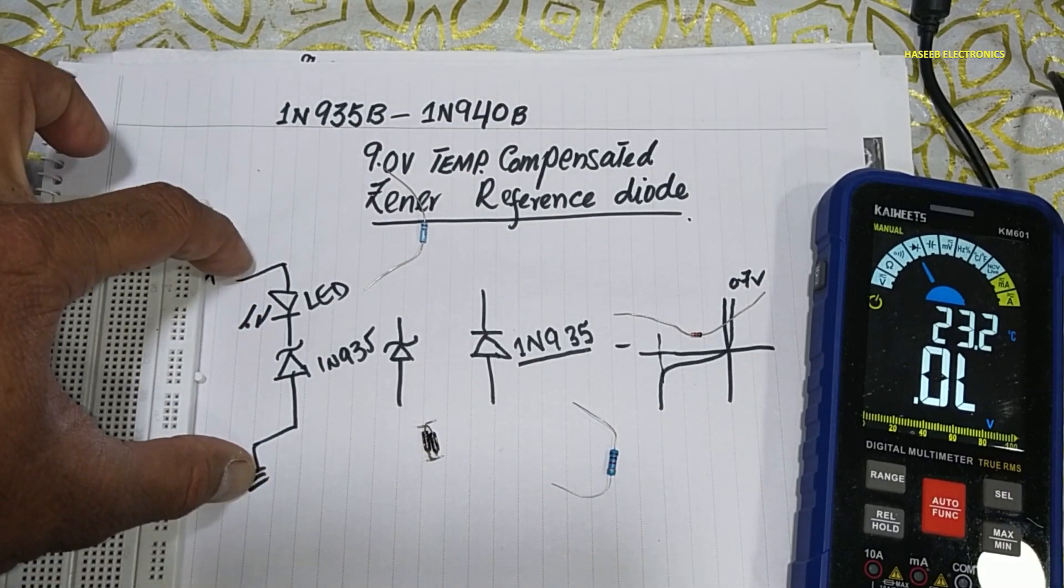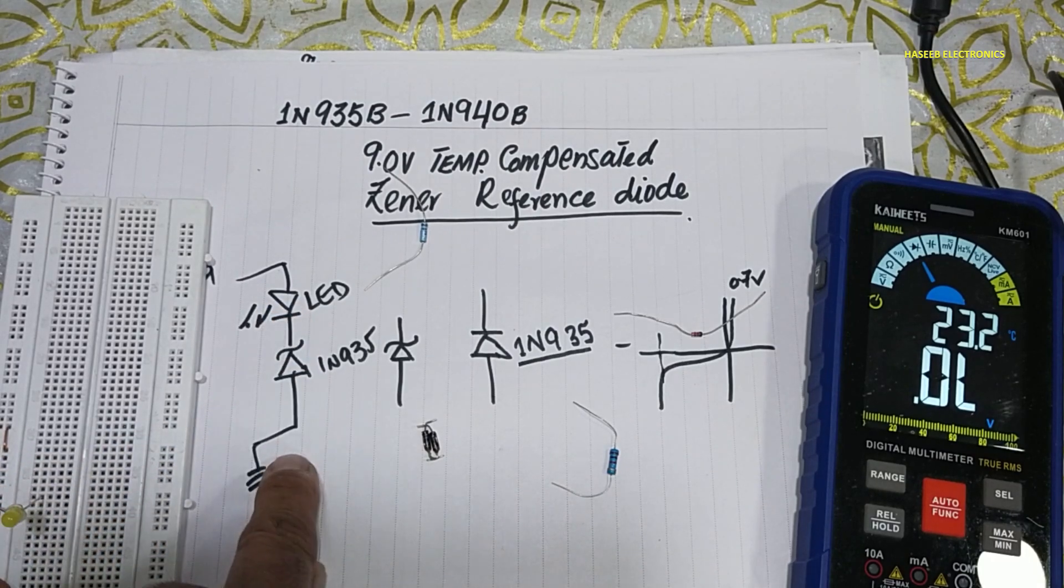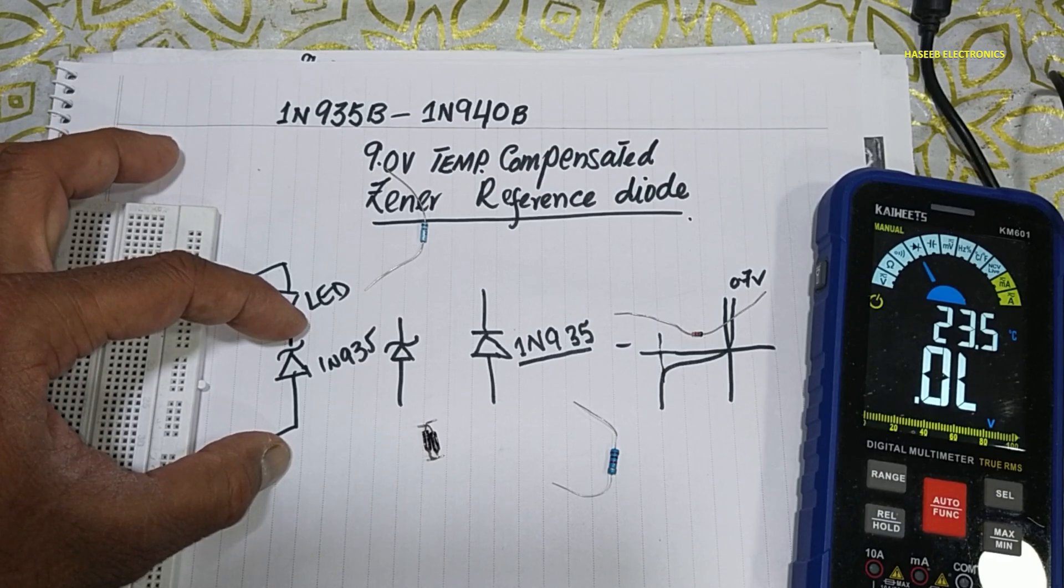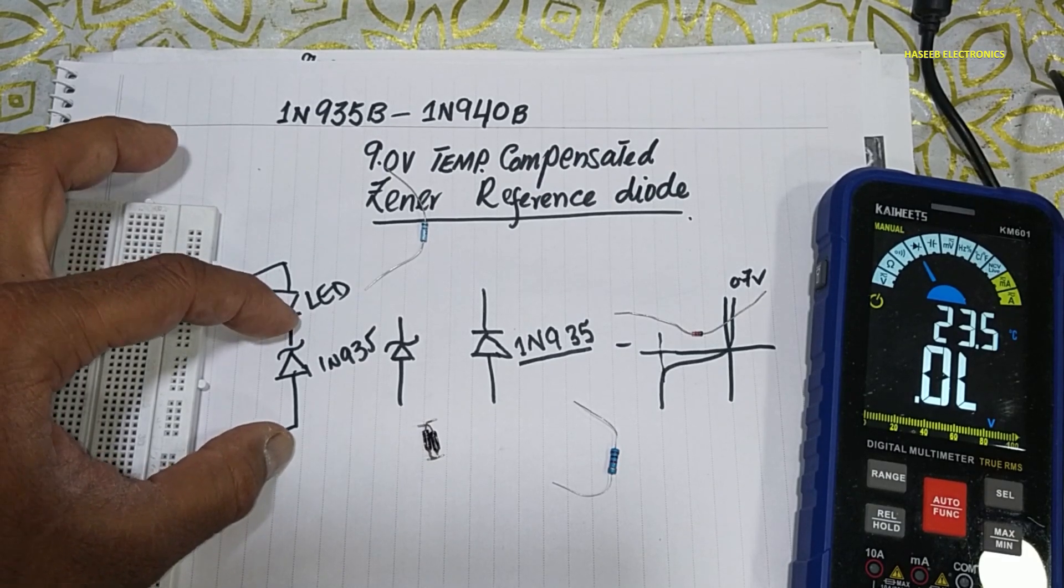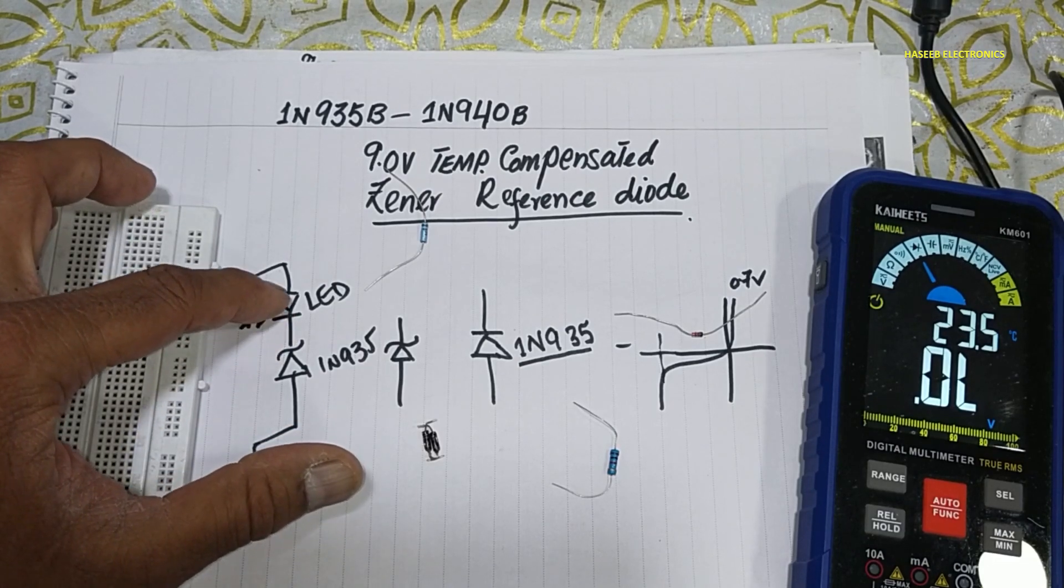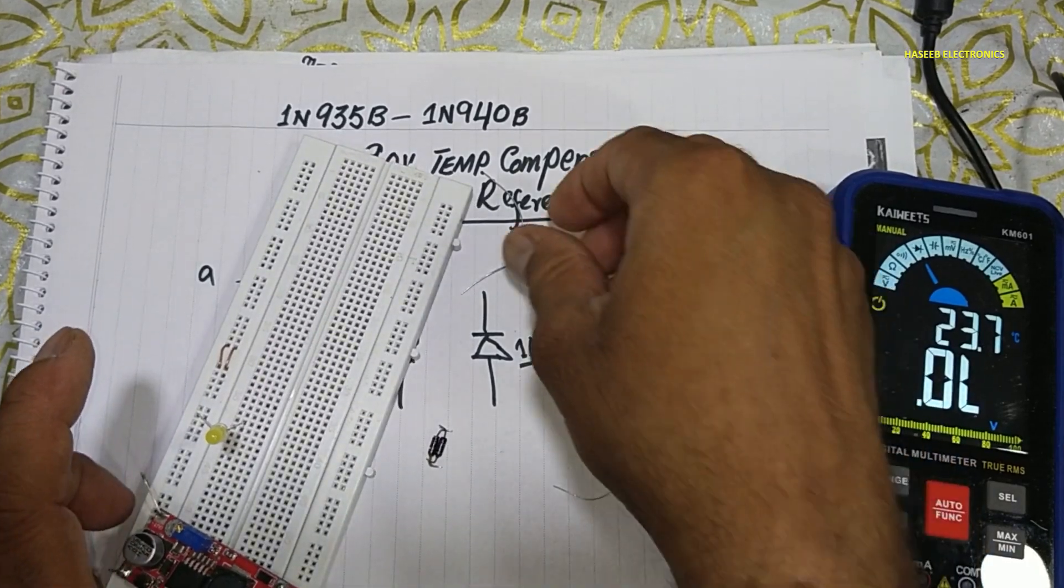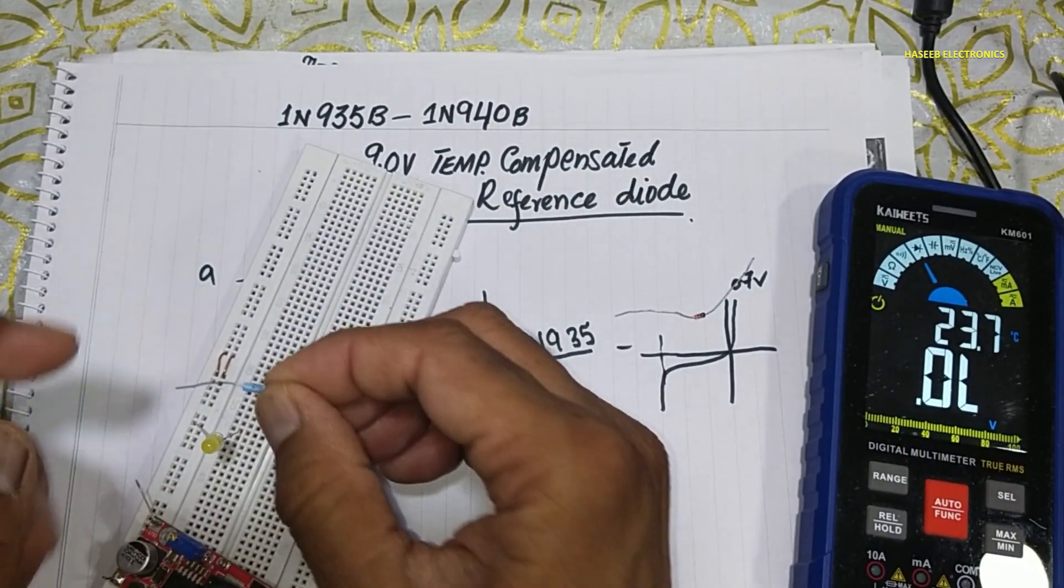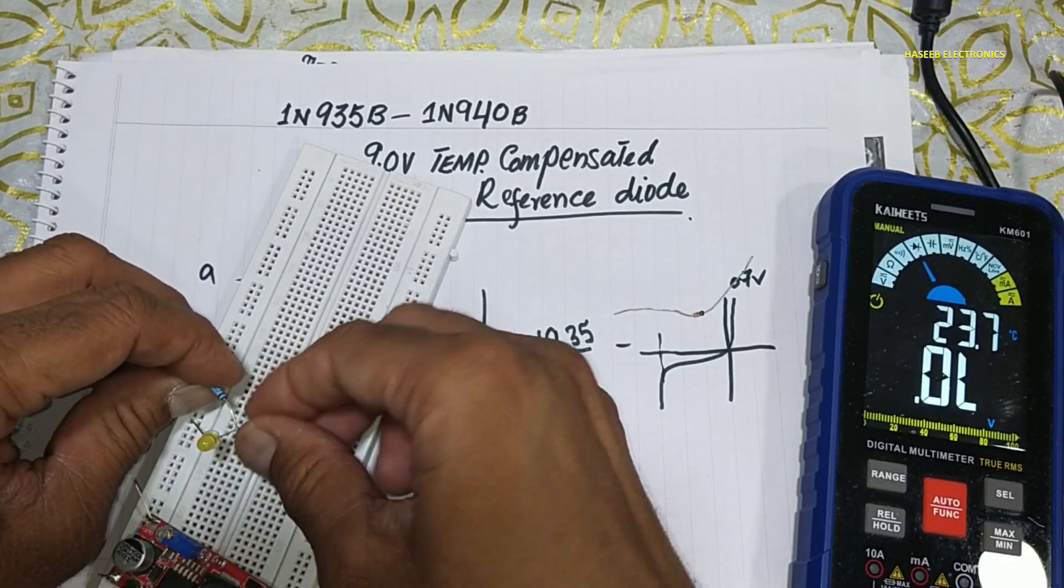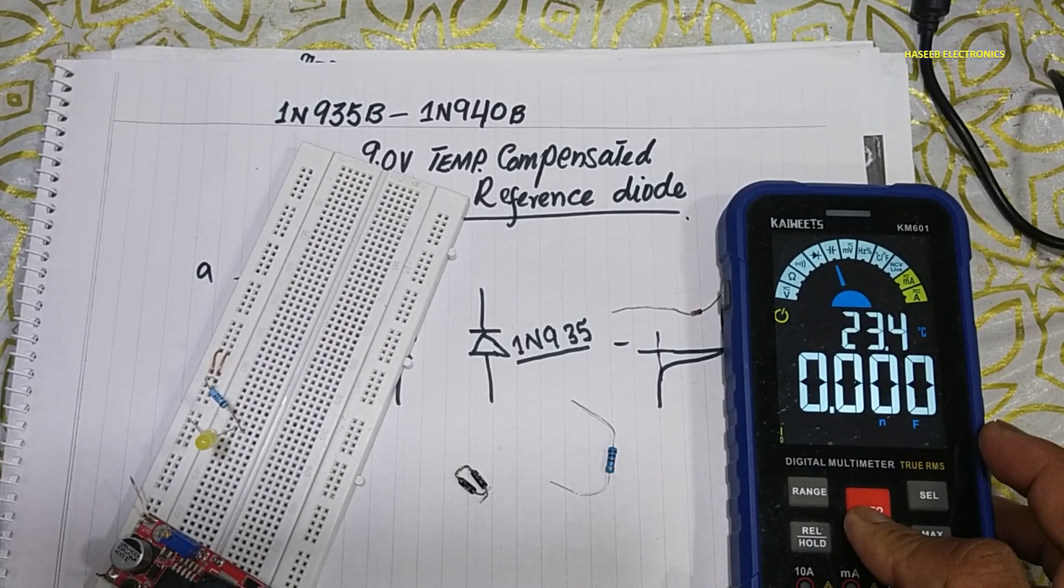When we apply variable voltage here, it will not allow current in the LED until it will obtain its nominal zener reference voltage. When 9 volts are present here, at that time it will provide cathode current. For test purpose, anode will be connected to ground and cathode will be connected to LED cathode. Set multimeter to DC voltage.